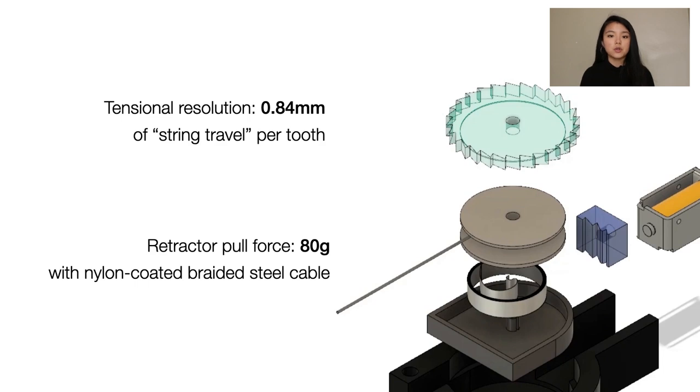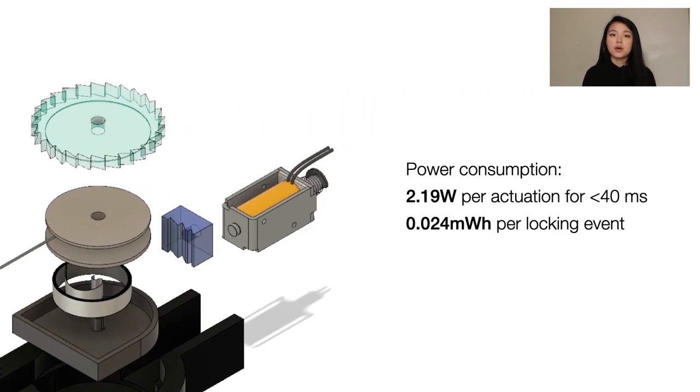We use a 12-volt push-pull solenoid that consumes 2.19 watts per actuation. With the ratchet design, the actuation is kept under 40 milliseconds, thus each locking event consumes merely 0.024 mWh.